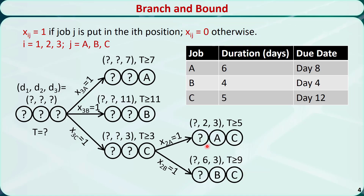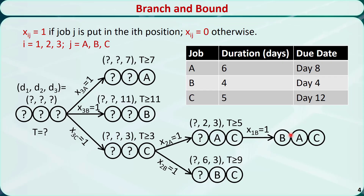We are not done yet. Next we need to follow this branch and check the first position. We can only put job B in the first position, so there is only one option. The total processing length is 15 days. Job C needs 5 days and job A needs 6 days, so the completion time of job B is 15 - 5 - 6 = day 4. Job B is due on day 4, so the delay is 4 - 4 = 0 days, meaning D1 = 0 days. The total delay is D1 + D2 + D3 = 5 days.